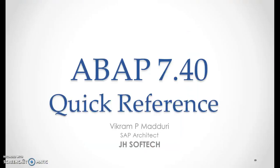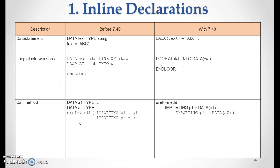So here we have that 7.40 quick reference. The first topic would be inline declarations. This is one of the major changes in 7.40. Before 7.40, the data statement would be something like: data test type string. Text is equals to ABC. This is how we used to declare and assign the value — first declare the variable, then assign the data.